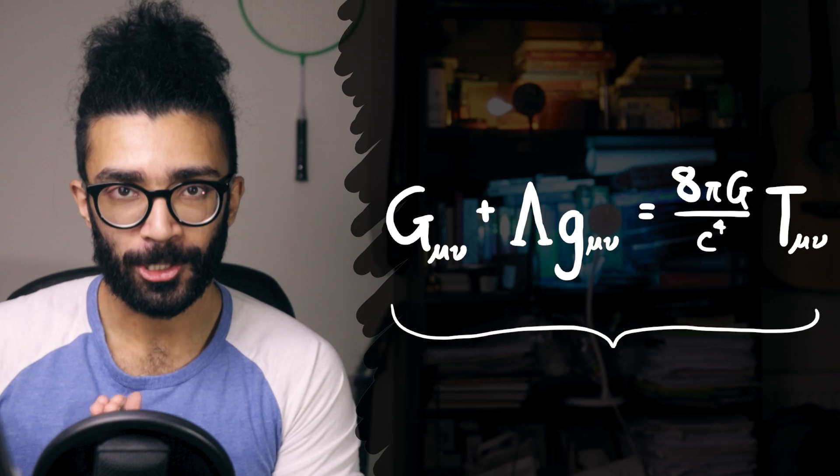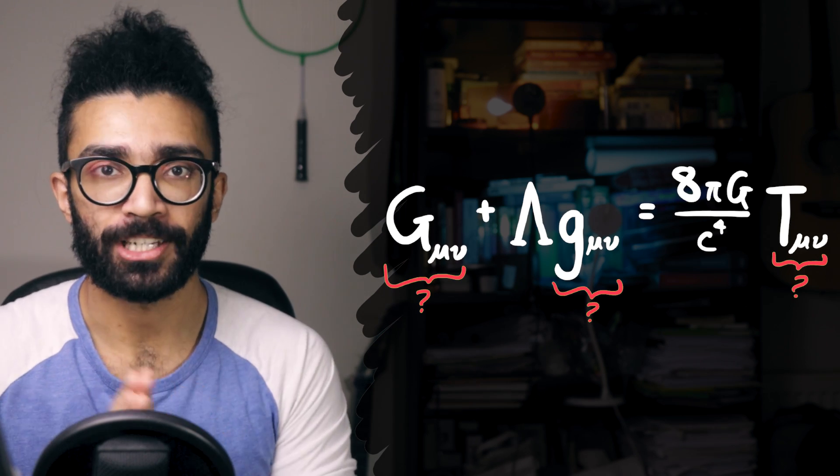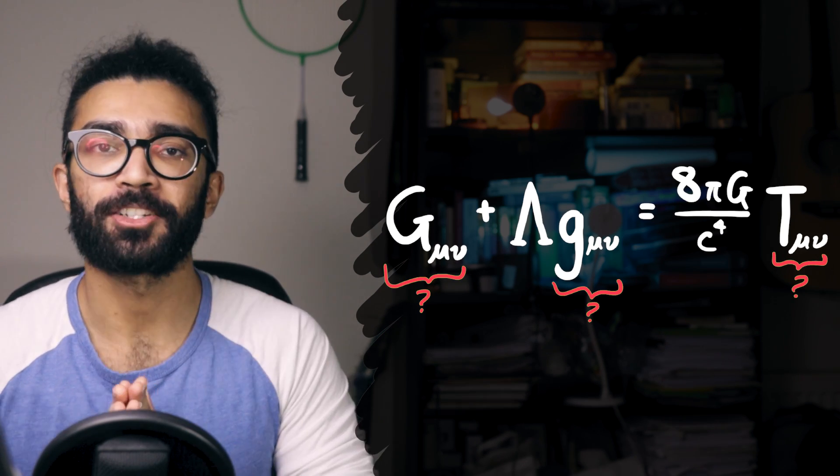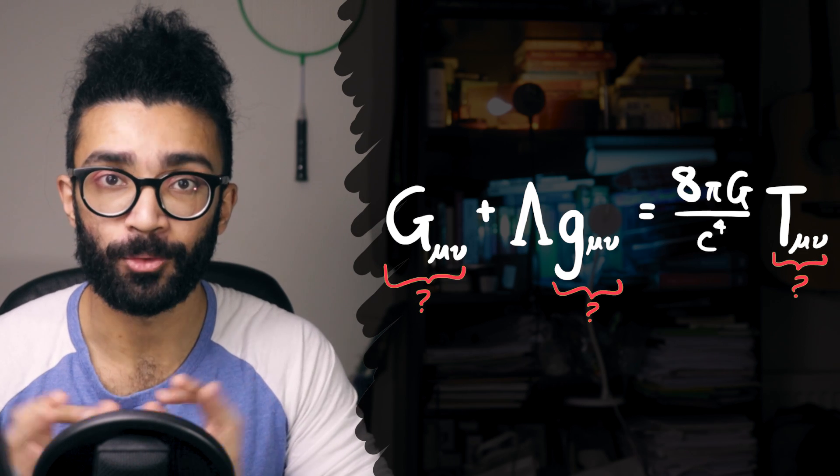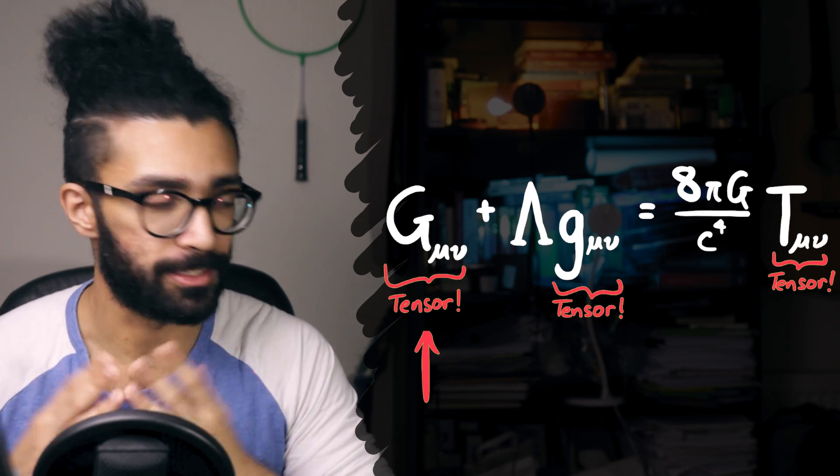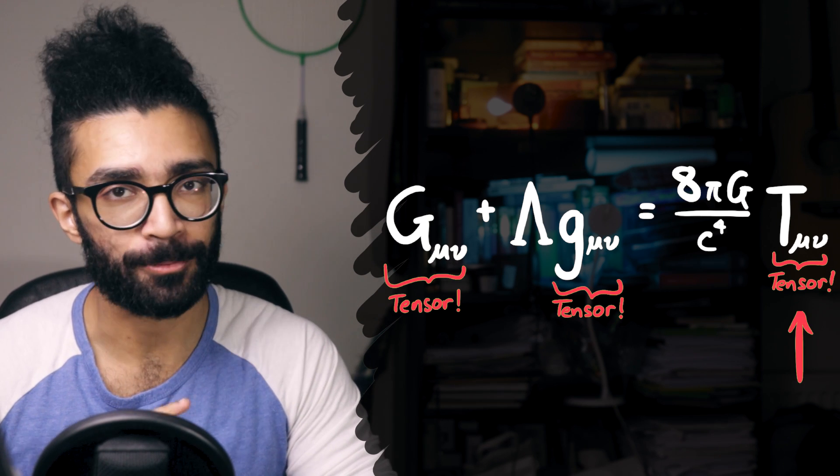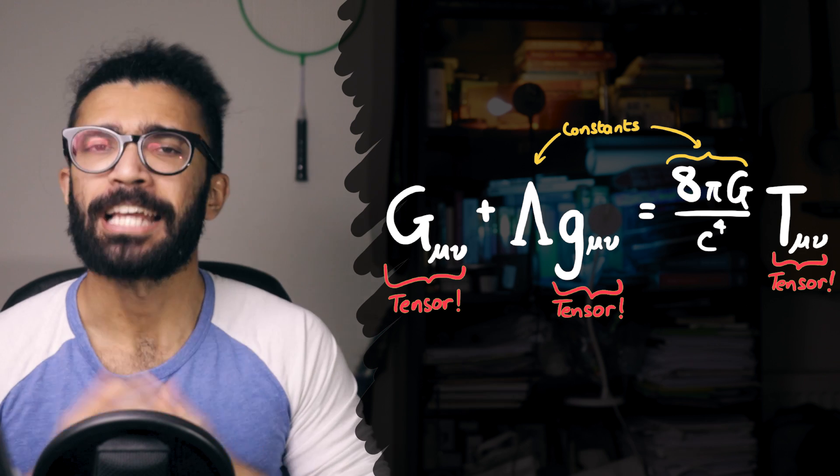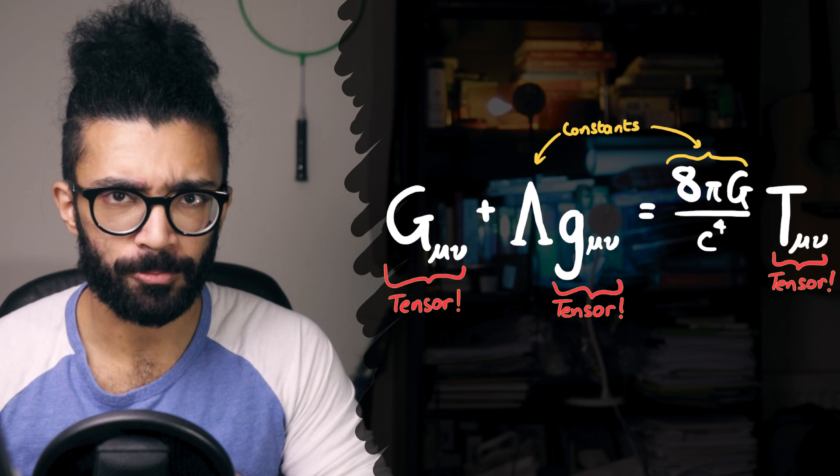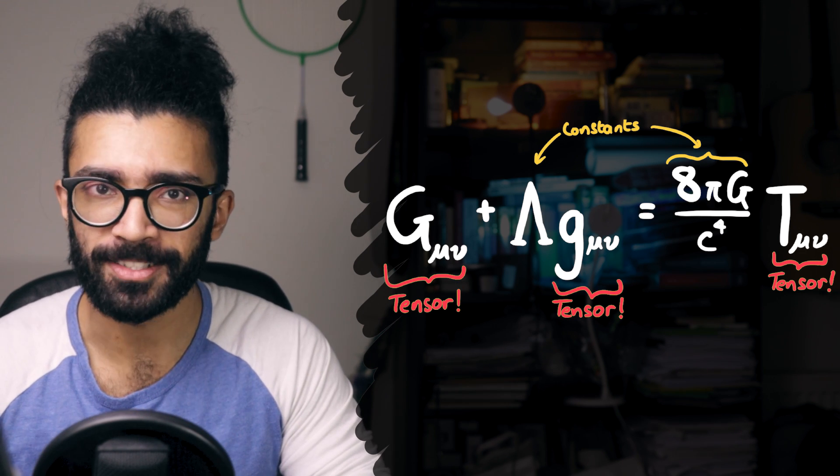Now before we take a detailed look at what each one of these terms actually means, another thing that we need to know is that these equations are dealing with tensors. G subscript mu nu is a tensor, lowercase g subscript mu nu is a tensor, and T subscript mu nu is a tensor as well.